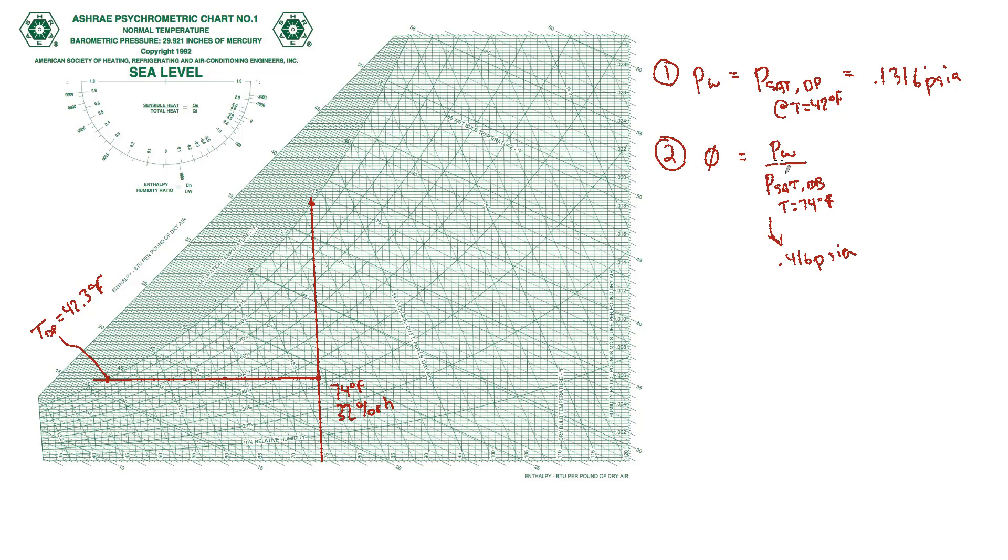So if I rearrange this formula to solve for partial pressure of water vapor, then it's the relative humidity times the saturation pressure at that dry bulb temperature. So in this case, only 32% of 0.416, which works out to 0.1331, which is pretty close to what we got when we did it the other way. And this was a bit of rounding, so this is probably the more accurate result.